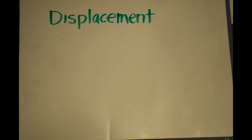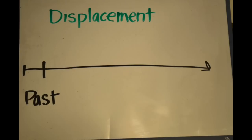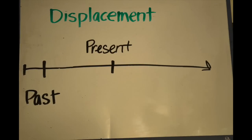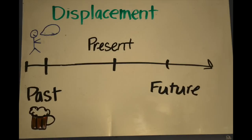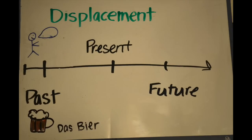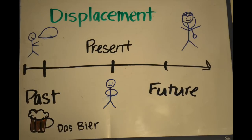Next is displacement, which allows us to talk about things that are not in the current environment. For example, we can talk about the past: "Yo, I had the craziest night last night." The present: "Oh, I don't feel so good." And the future: "I'll see the doctor tomorrow."